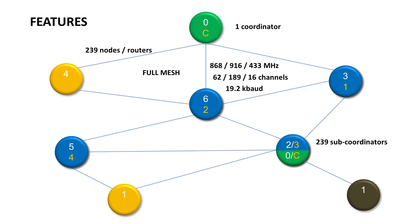Each node can work as a coordinator for its sub-network as well, so you can have up to 239 sub-coordinators with 239 sub-networks and each of the sub-networks can have up to 239 nodes. This means you can have literally thousands of nodes in one network.